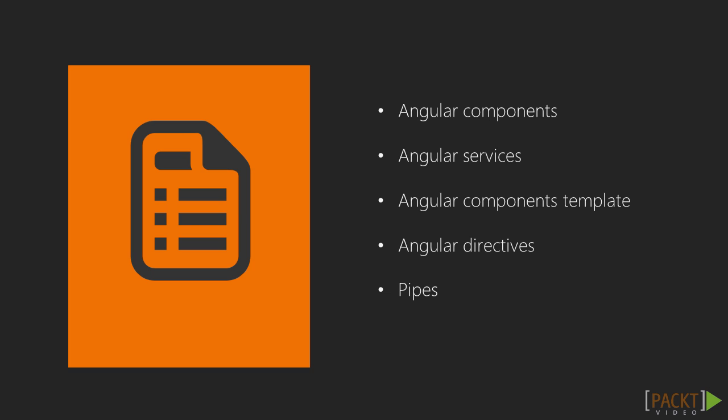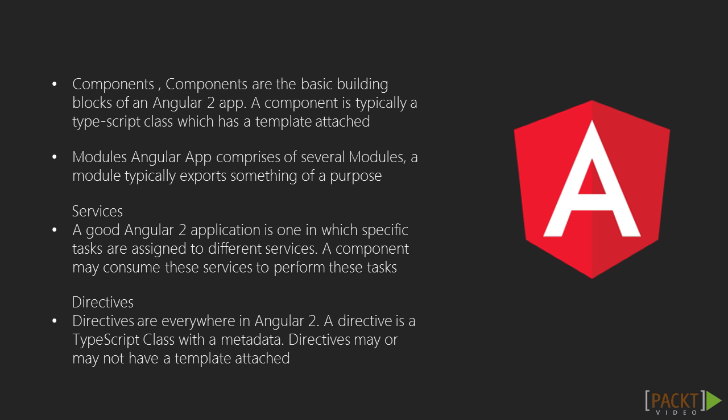Now we have everything in the form of an ES6 class — whether it's a pipe, directive, or a service. Let's quickly understand these one by one. Components are the basic building blocks of an Angular 2 app. A component is typically a TypeScript class which has a template attached.